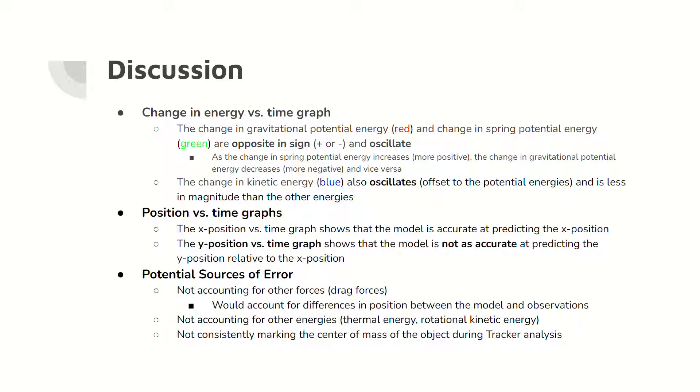Potential sources of error include not accounting for other forces, which would account for the aforementioned discrepancy in y position data versus the x position data, not accounting for other energies, and not consistently marking the center of mass during tracker analysis.